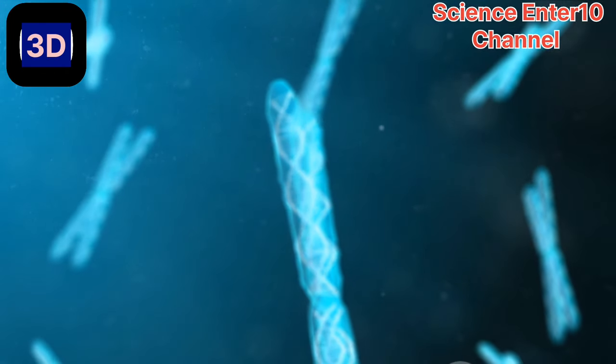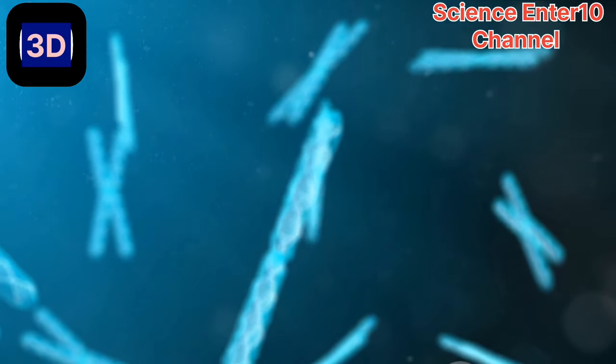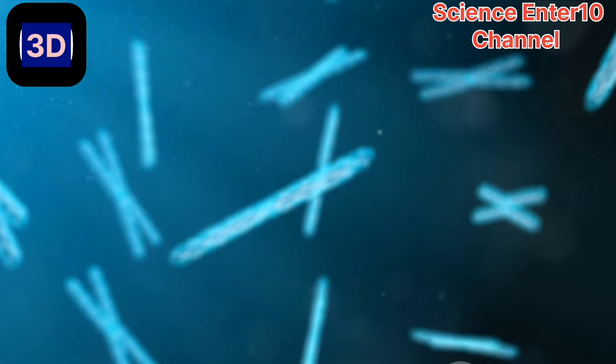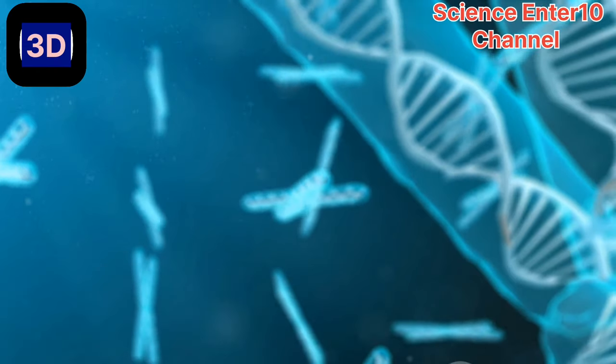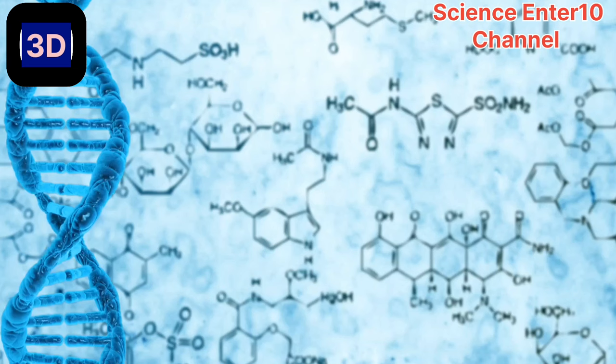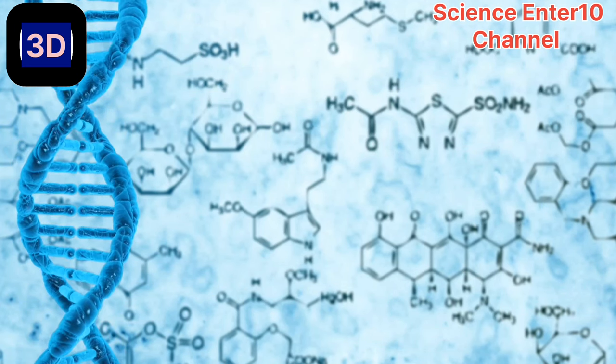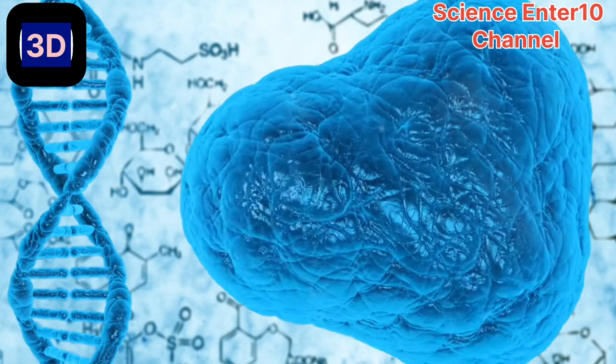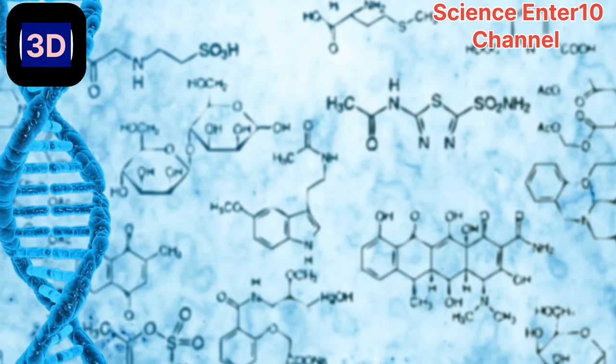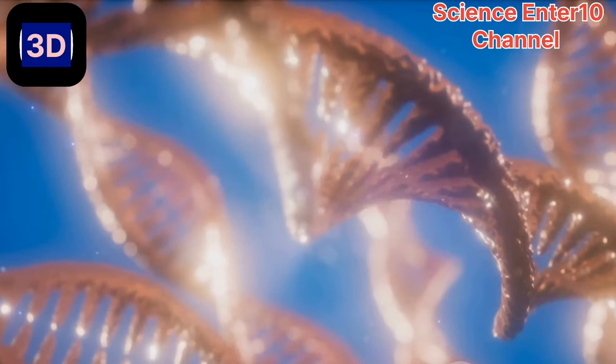Picture an imaginary line drawn across the center of the cell. This is the metaphase plate, and it's on this stage that our chromosomes take their positions. During metaphase, the spindle fibers, like invisible puppet strings, guide the chromosomes to align perfectly along this metaphase plate.